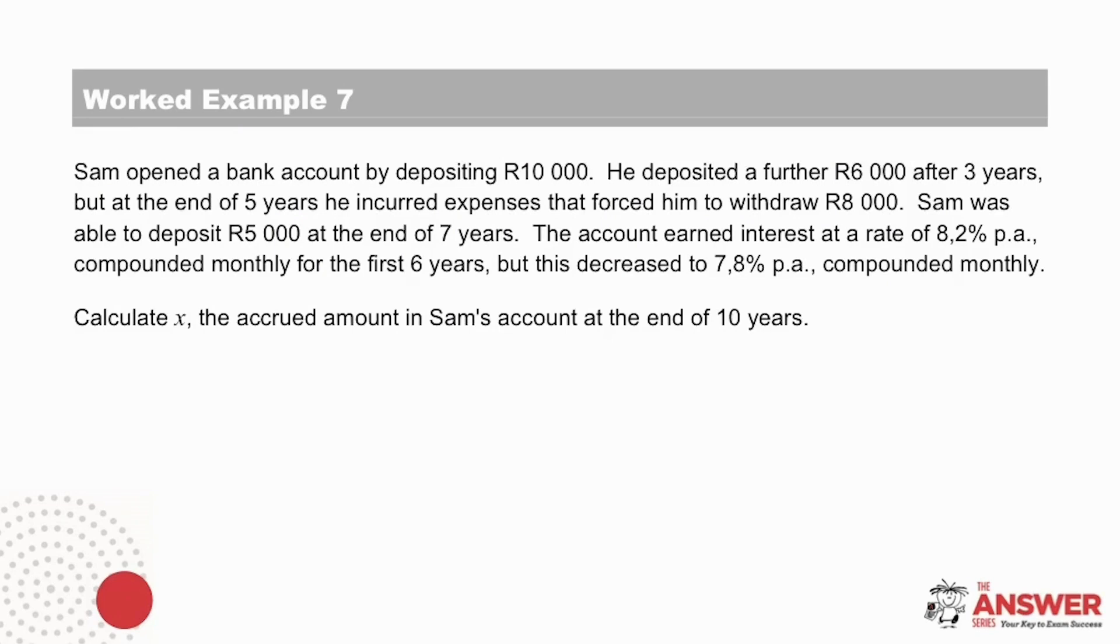In this example, we are told that Sam opened a bank account by depositing 10,000 rand. He deposited a further 6,000 rand after 3 years, but at the end of 5 years, he incurred expenses that forced him to withdraw 8,000 rand. Sam was able to deposit 5,000 rand at the end of 7 years. The account earned interest at a rate of 8.2% per annum, compounded monthly, for the first 6 years, and then this changed to 7.8% per annum, compounded monthly. We have been asked to calculate X, the accrued amount in Sam's account at the end of 10 years.